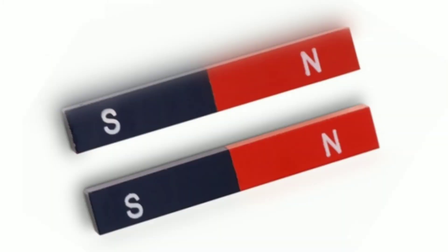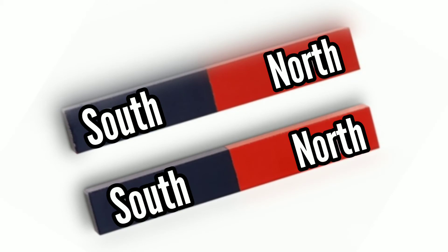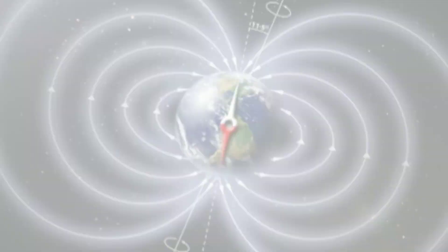There are two magnetic poles in a magnet. The north pole and the south pole. Just like our earth.